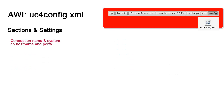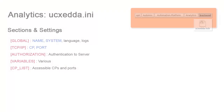AWI is fairly straightforward. The uc4config.xml file requires a connection name and system. You also have to specify the CP hostname and ports for AWI to connect to the CP. Analytics is essentially an agent, and the settings are comparable to that of an agent. The default agent name is IA. The system name should match UCSRV.ini, and the TCP-IP information for the CP is imported accordingly.